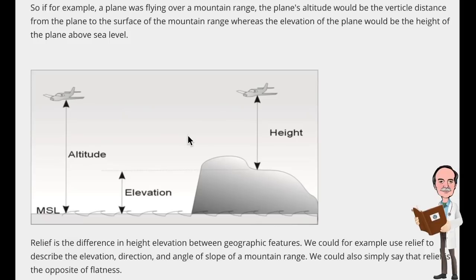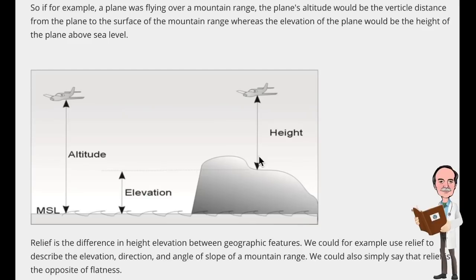The height above the ground is the actual height between an object, such as an aircraft, and the ground directly underneath it. The vertical relief is the difference between two points on the surface of the Earth. For example, the vertical relief of a mountain from sea level to 10,000 feet would be 10,000 feet. The vertical relief from a plateau at 7,000 feet to the top of the mountain would be 3,000 feet.